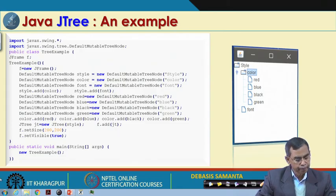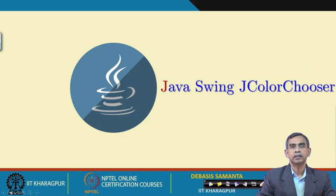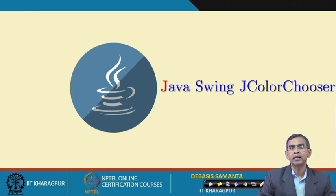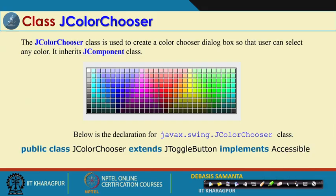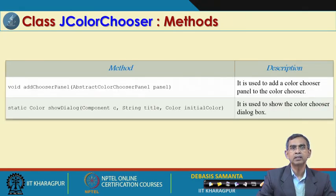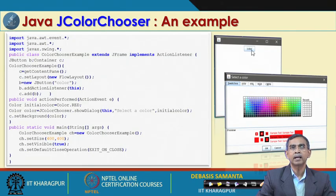JColorChooser is very interesting. When you use a word processor and need to set the color of a font, you choose it from a color panel. Here is what the color panel looks like — you can choose any color and set it, instead of writing color.blue or color.green. By default it has around 200 colors, but more can be added. There is a method by which the chosen color value can be used in your program.